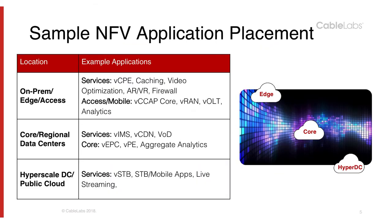Let's look at concrete examples of what types of applications belong in each environment. For on-prem, edge, or access, services such as virtual CPE, caching, video optimization, augmented reality, virtual reality, and firewalls could all be on the edge. In terms of access technologies, vCCAP core for cable, vRAN for mobile, virtual OLT for fiber, and analytics are the types of applications that can be on the edge.